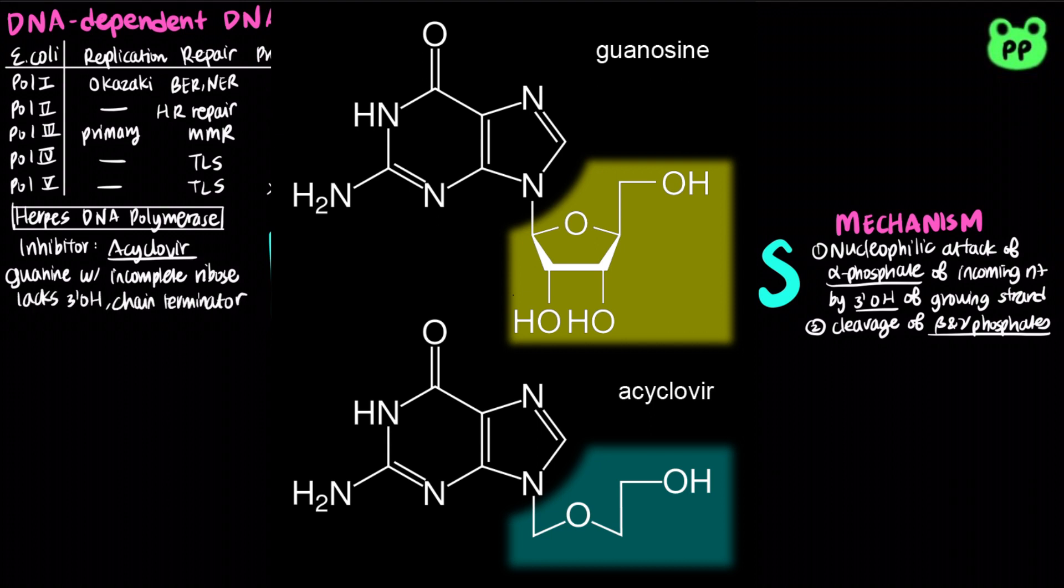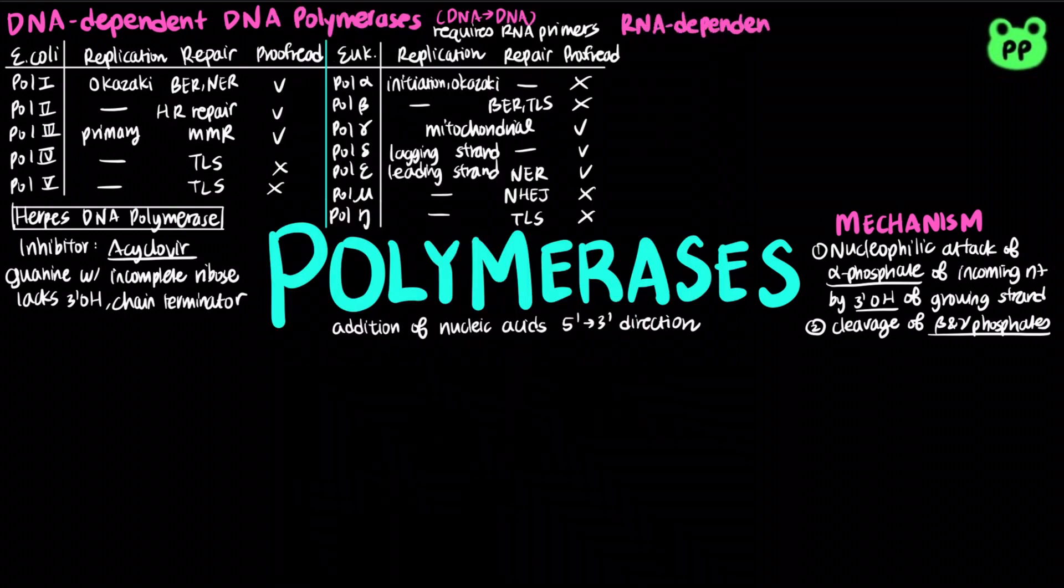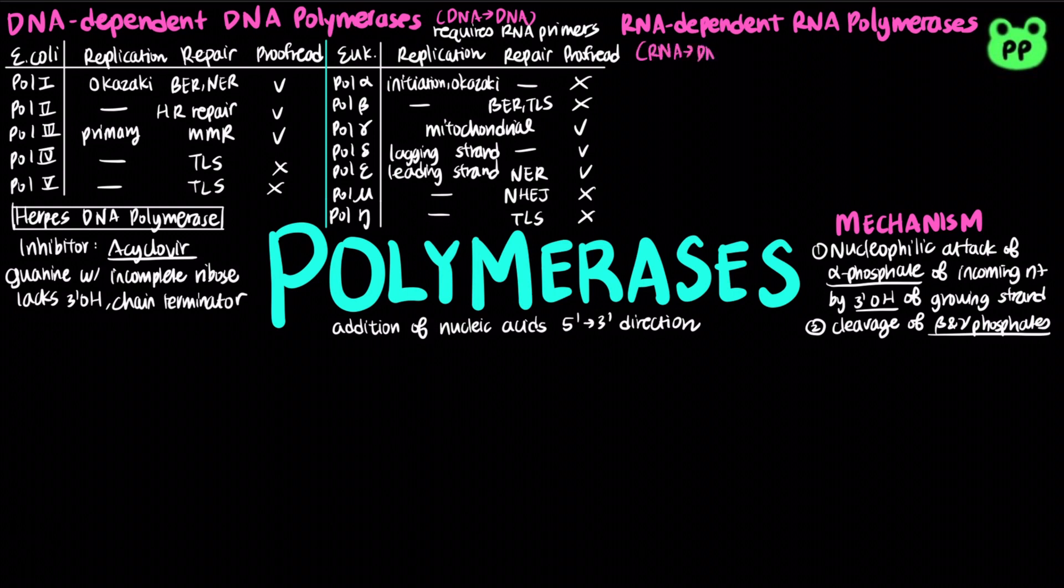RNA-dependent DNA polymerases use RNA instead of DNA as template. They are known as reverse transcriptase.